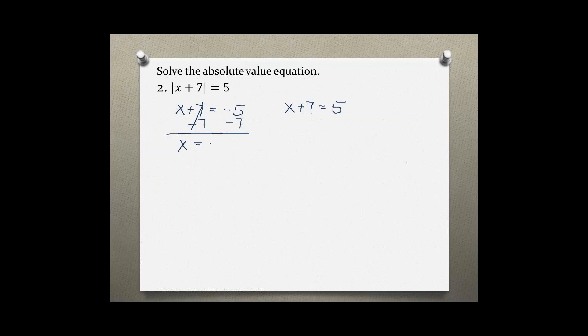On the right side, we also subtract 7 from both sides, which gives us x equals negative 2. Now let's check our solutions.